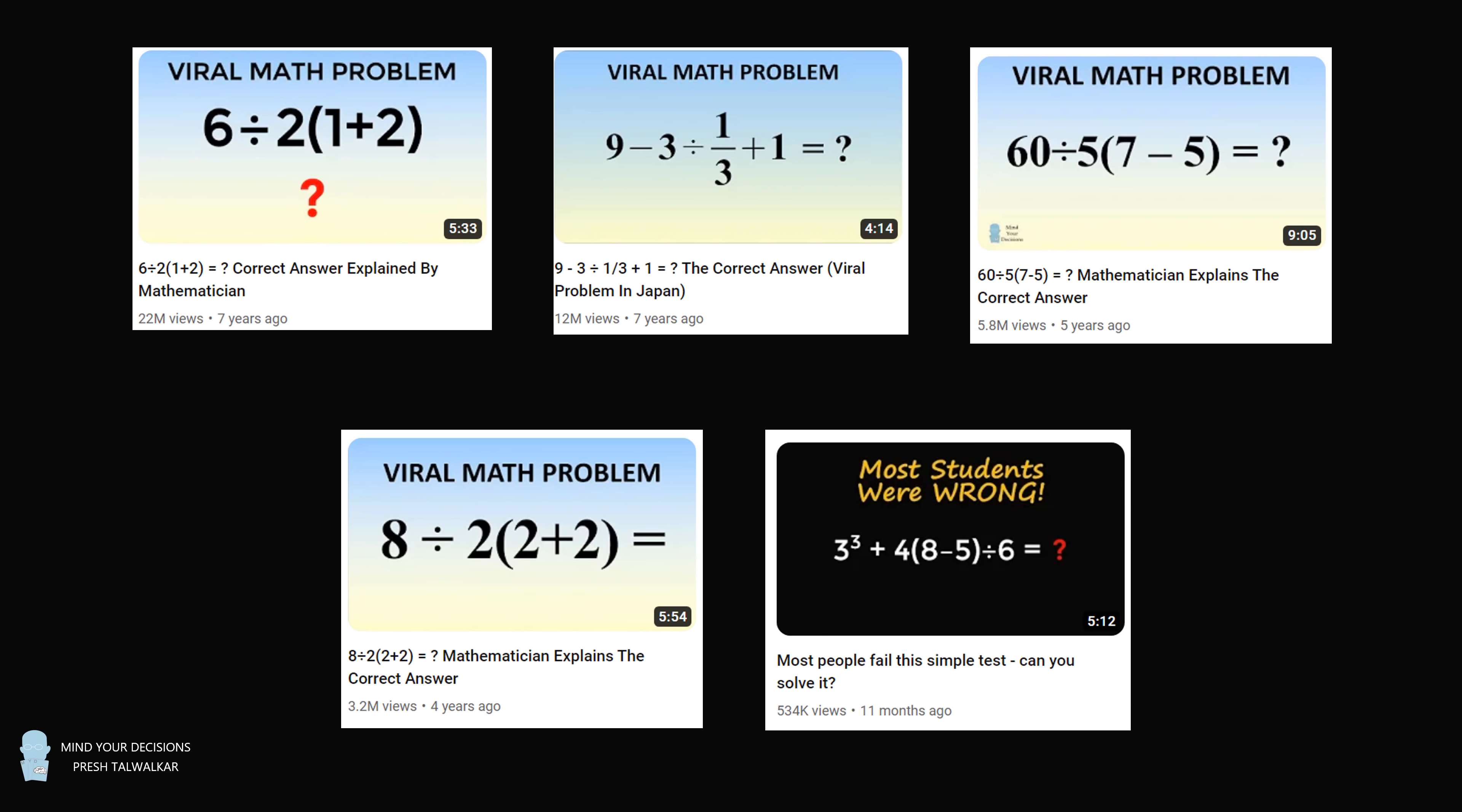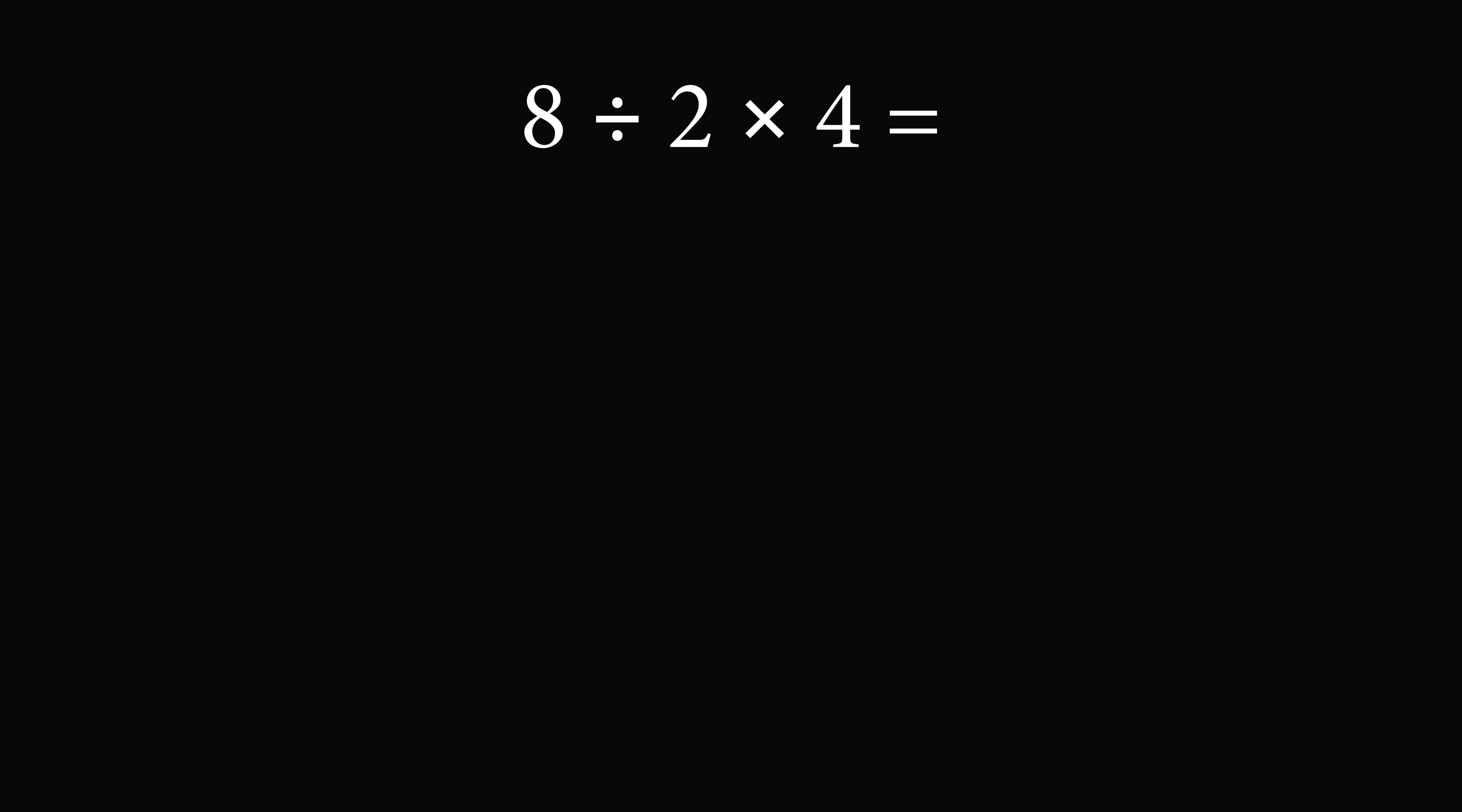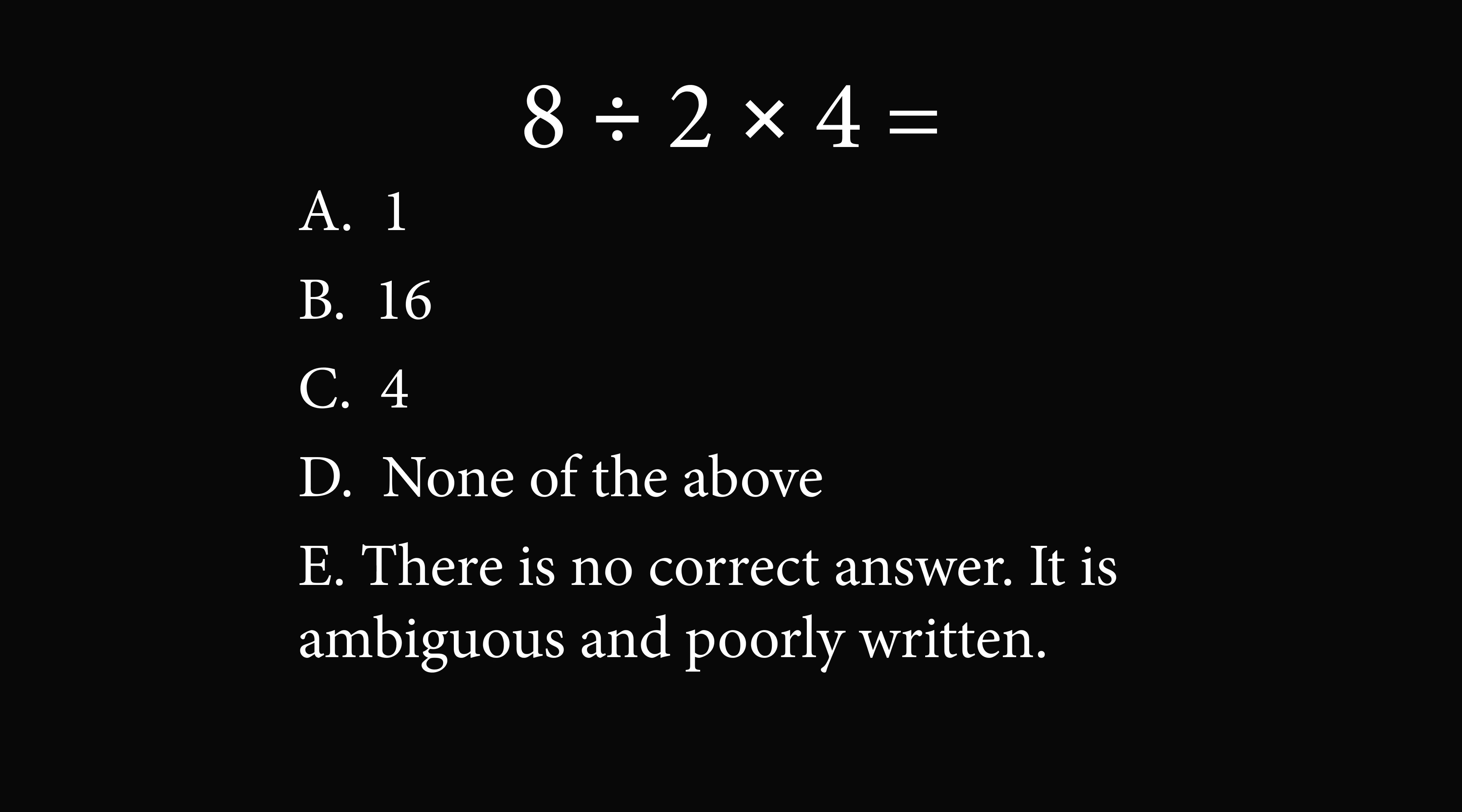I'm so happy to cover these topics and to clear up misconceptions. Here's another problem that came across my desk. What is 8 divided by 2 multiplied by 4 equal to? The answer choices are 1, 16, 4, none of the above, or there is no correct answer, it is ambiguous and poorly written. What do you think the correct answer is?